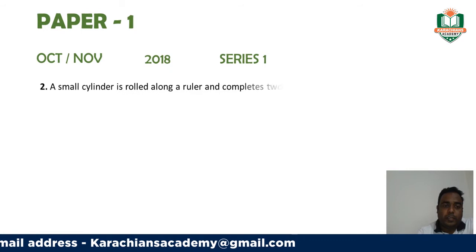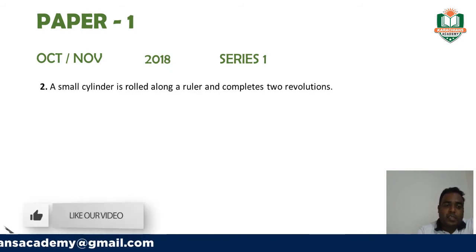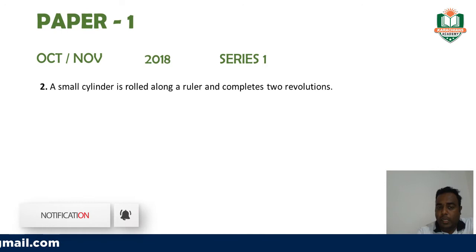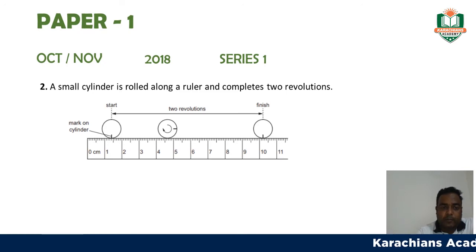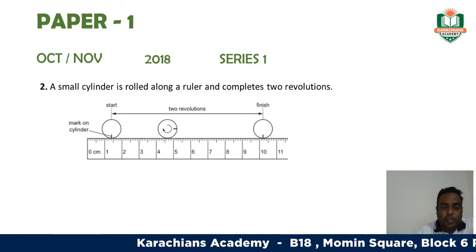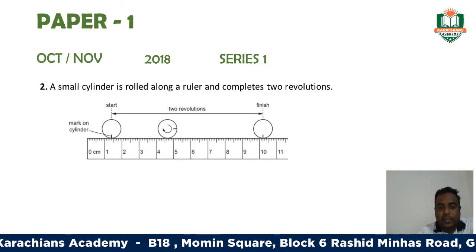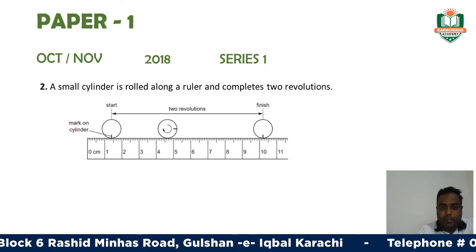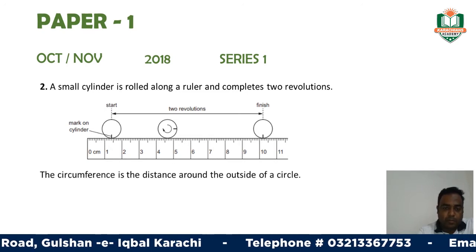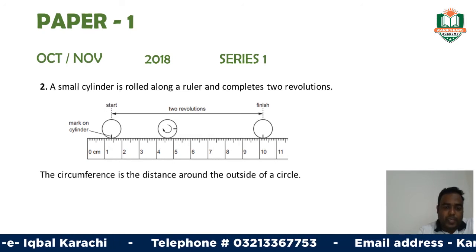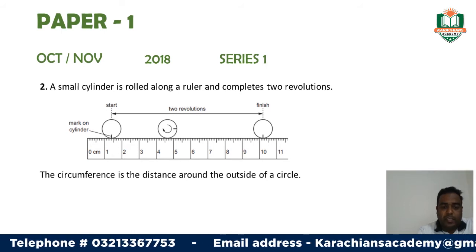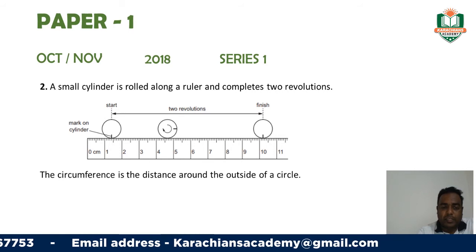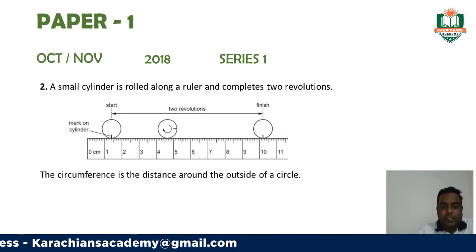Series 1. The background of the question is: a small cylinder is rolled along a ruler and completes two revolutions. Here is the diagram showing on a ruler the point where the revolution of the cylinder has started, and where it reached after completing two revolutions. They are asking us about the circumference — the distance around the outside of the circle.